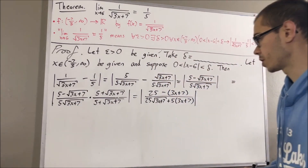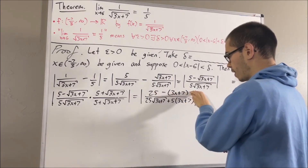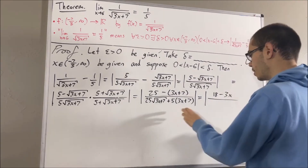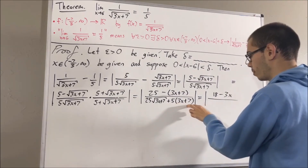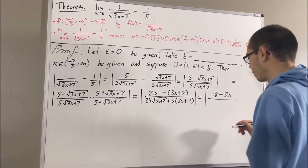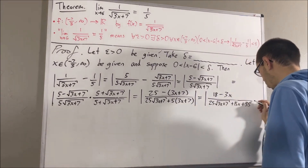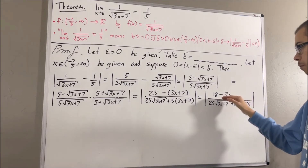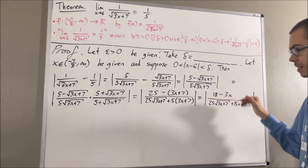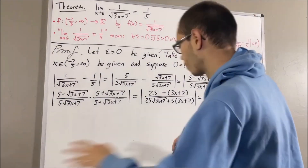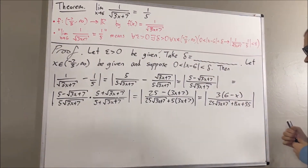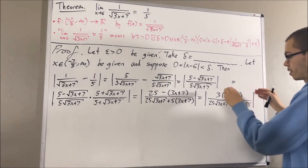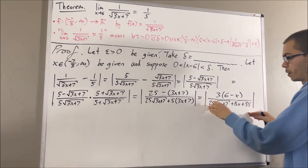In the numerator, this simplifies down to 18 minus 3x. In the denominator, distributing the 5 gives us 15x plus 35. In the numerator, we can factor out a 3, leaving us with 3 times 6 minus x. Now let's use a property of absolute values, which tells us that the absolute value of a fraction equals the absolute value of the numerator over the absolute value of the denominator.